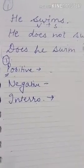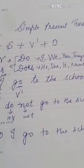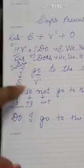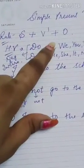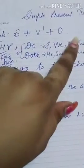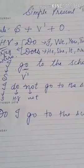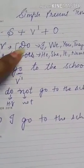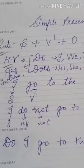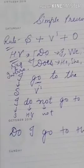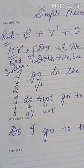This is your homework. I am revising the rule again: subject + first form of the verb + object. Helping verbs 'do' and 'does' are used only in negative and interrogative sentences.